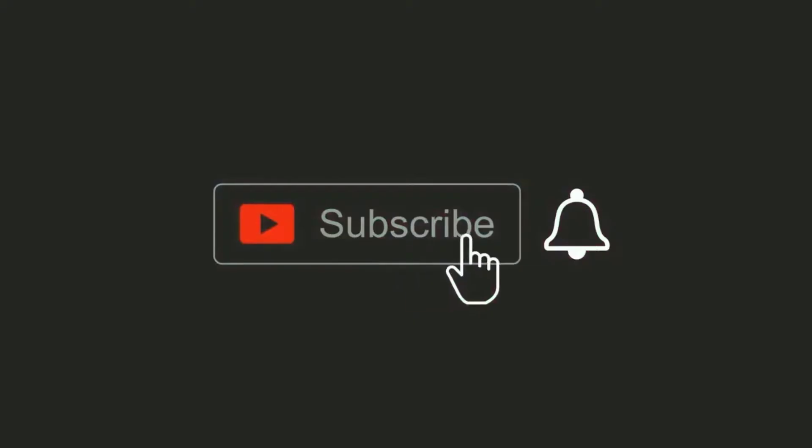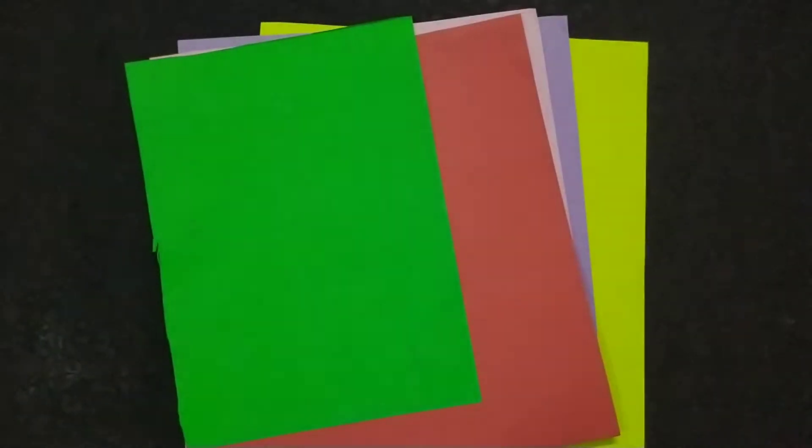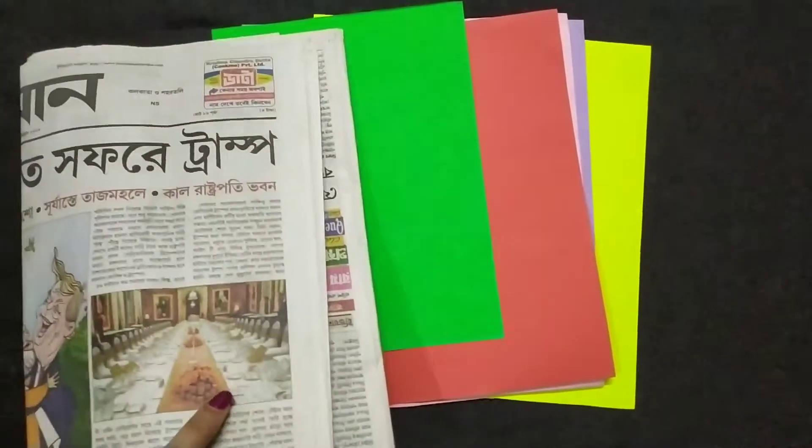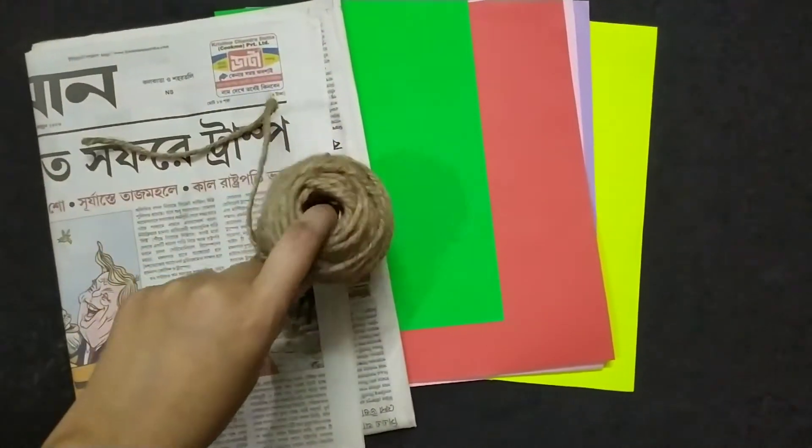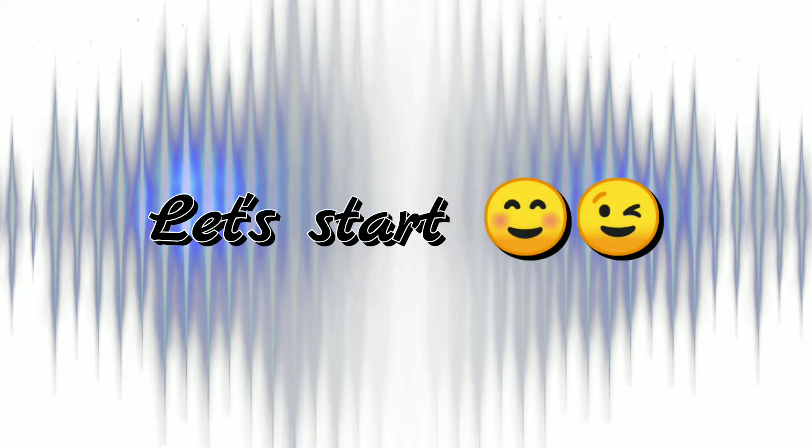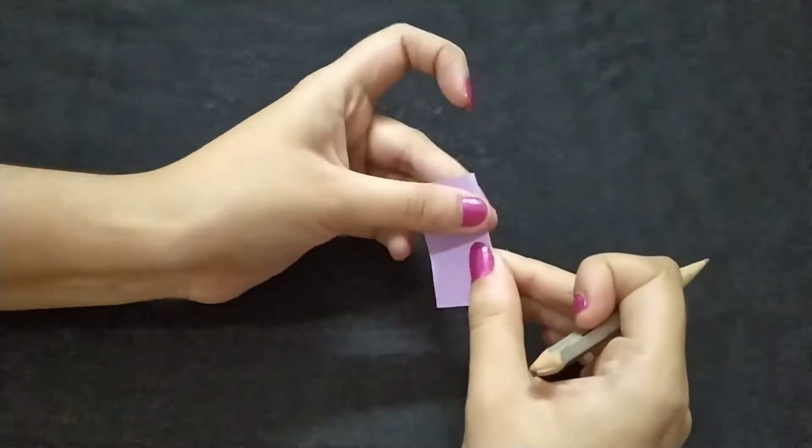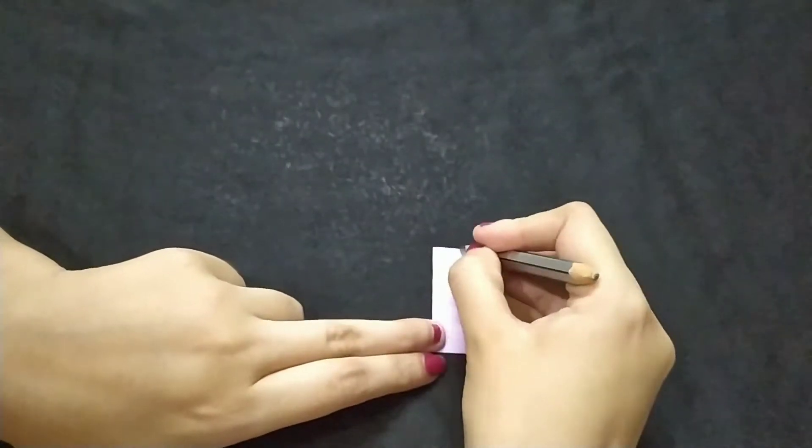Hello everyone, welcome back. Before we start, please subscribe and hit the bell icon. For today's video, we will need some colored papers, some newspapers, and some jute rope. So let's start.